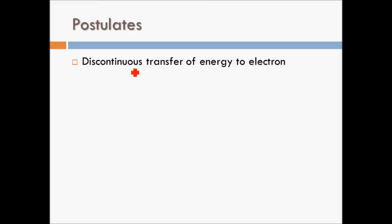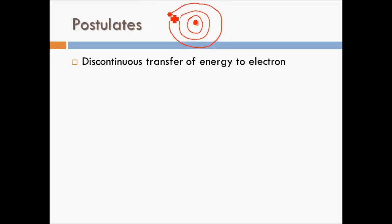Now let's look at more postulates — the discontinuous transfer of energy to the electron. The electron revolves in orbit 1, 2, or 3 and so on. The energy of the electron will be equal to the energy of whichever orbit it occupies — E1, E2, E3, up to E-infinity. The transfer of energy to the electron is discontinuous.